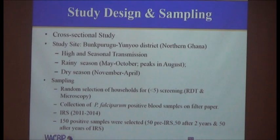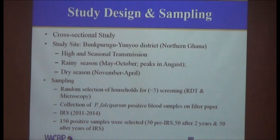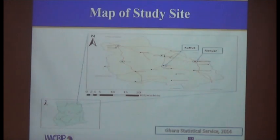I selected 150 samples: 50 from the pre-IRS group, 50 from 2012, representing two years after the IRS. I put my samples from two communities — 50 from one and 50 from the other.